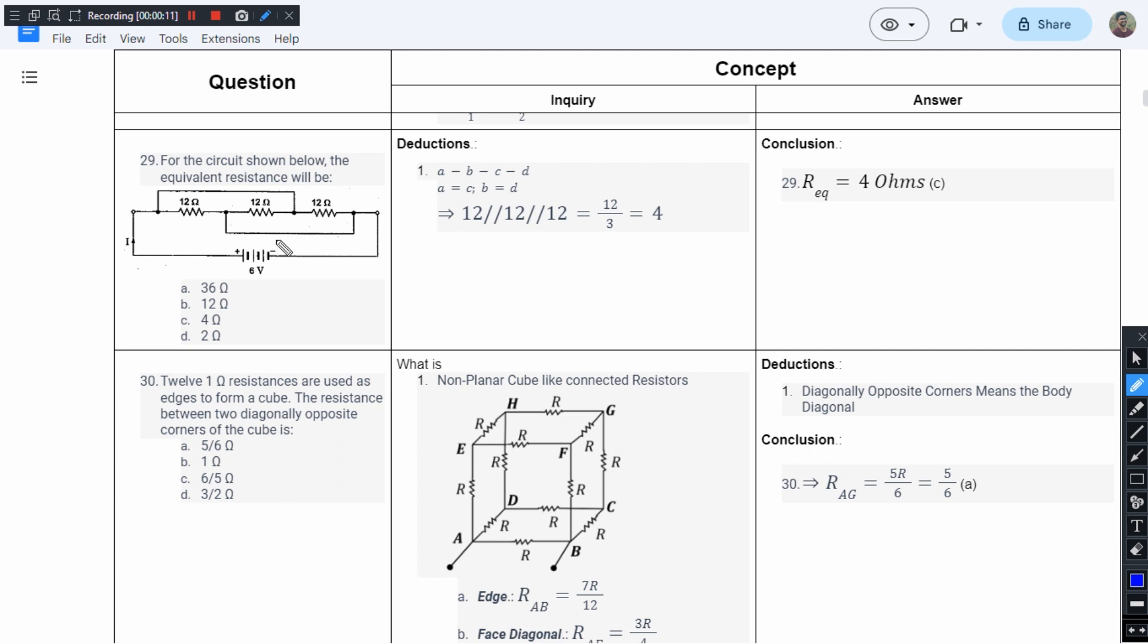Whenever you come across circuits like this, you have to name the nodes. This is node A, this is B, this is C, and this is D.